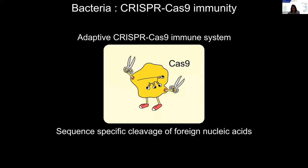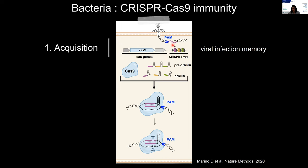How does this CRISPR-Cas9 system work? Upon acquisition, small pieces of viral DNA are integrated into a CRISPR locus as spacers in between conserved repeat sequences. This CRISPR array, which contains spacers from different origins, constitutes a memory of past viral infections.